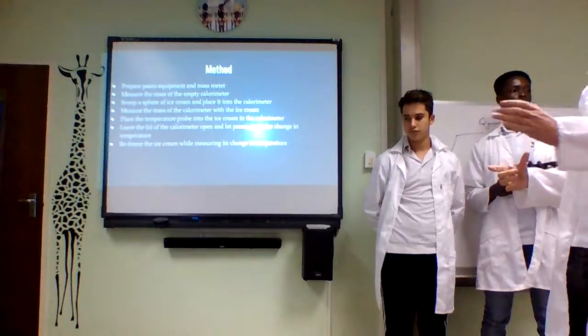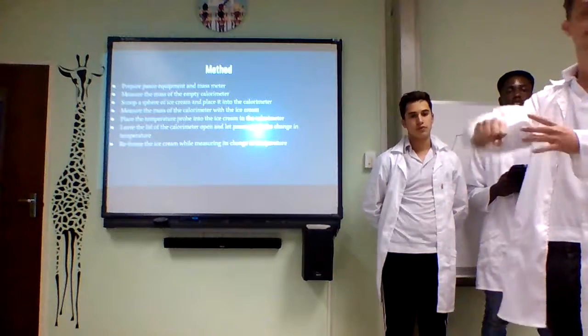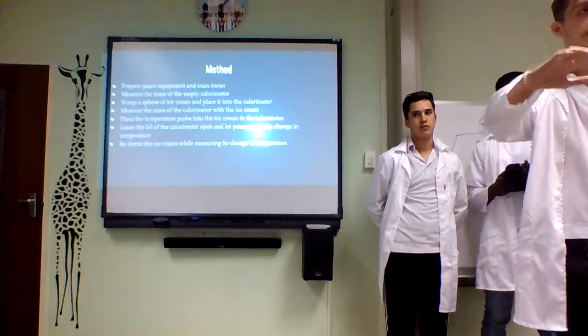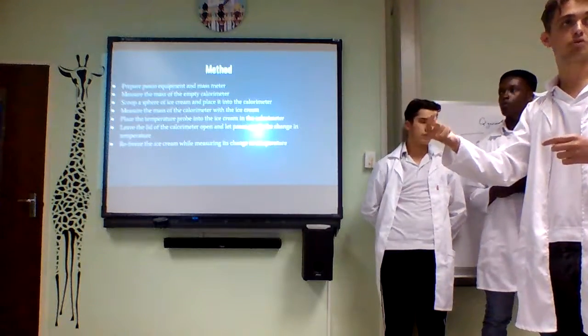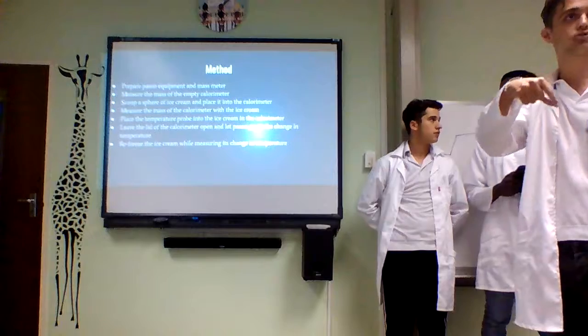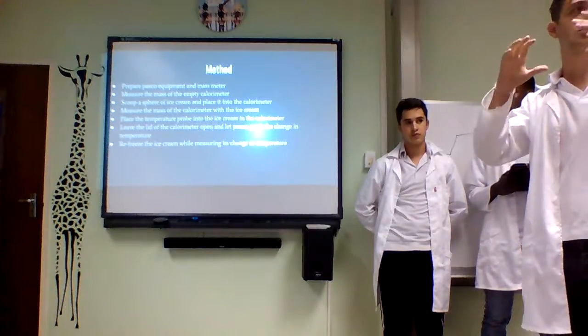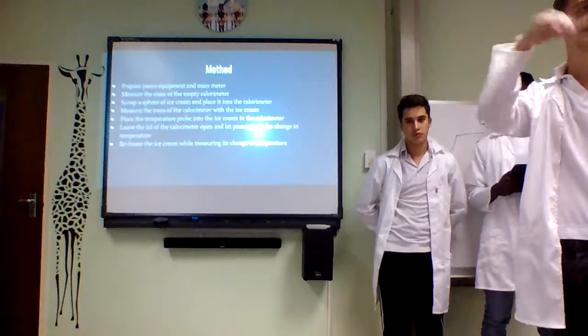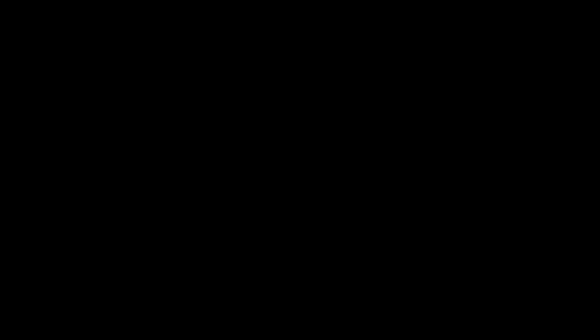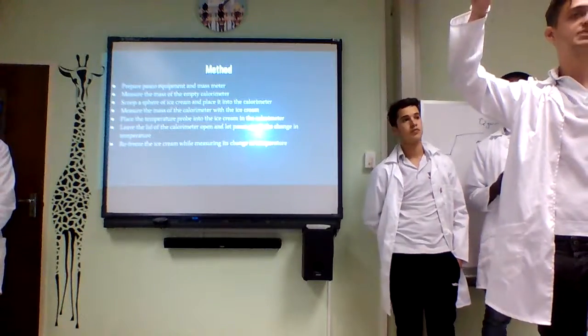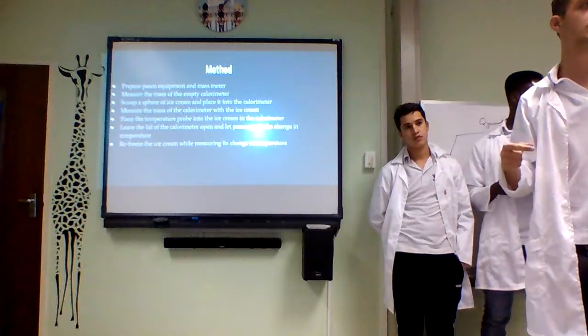You measure the mass of the calorimeter without the ice cream. You take a fixed scoop of the ice cream, place it in the calorimeter, and measure that mass with the lid closed. Then you put the PASCO temperature probe into the ice cream. What we decided was we had to keep the lid open to allow some energy into it, because otherwise with the lid closed it just took too long. After we had melted it and it got to room temperature, we placed it back into the freezer with the probe still in the ice cream to measure its freezing point.